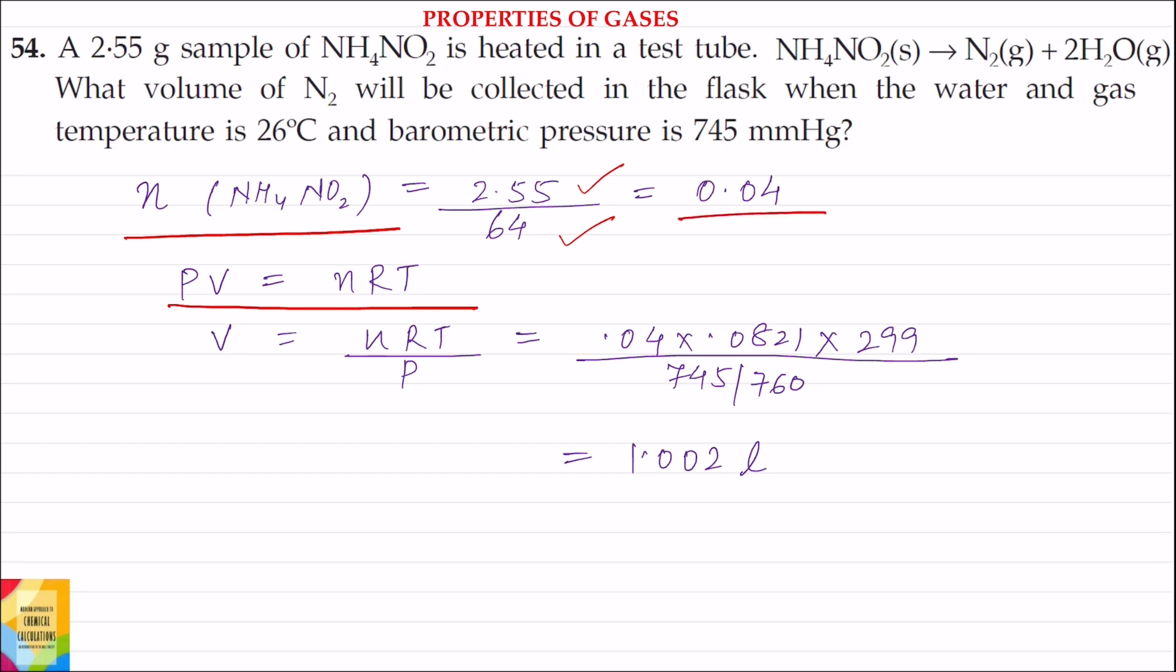Now applying the formula PV is equal to nRT, V is equal to nRT divided by P. Value of n hai 0.04, value of R hai 0.0821 and value of temperature is 299 Kelvin.